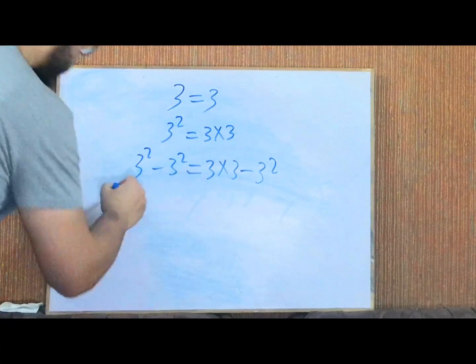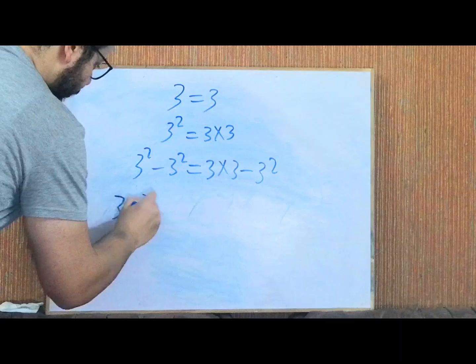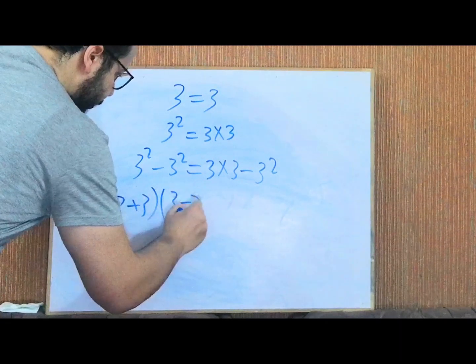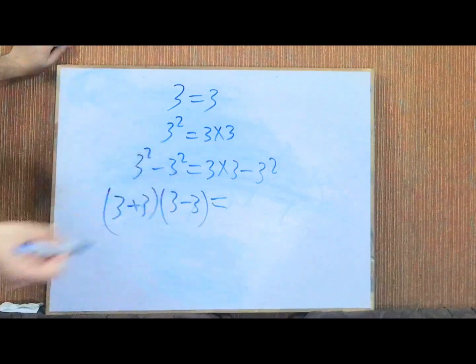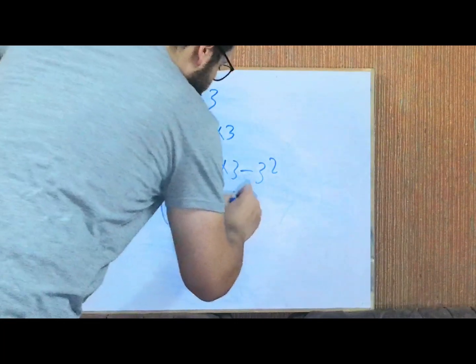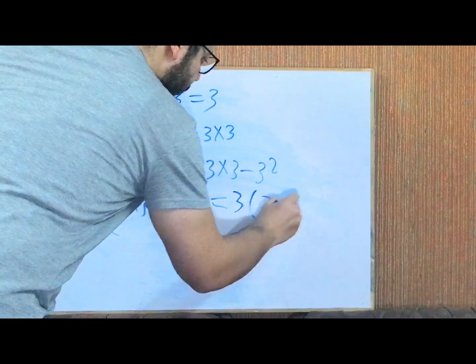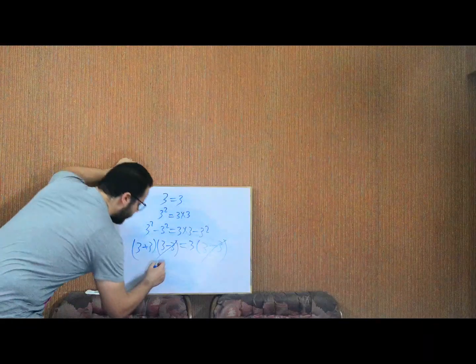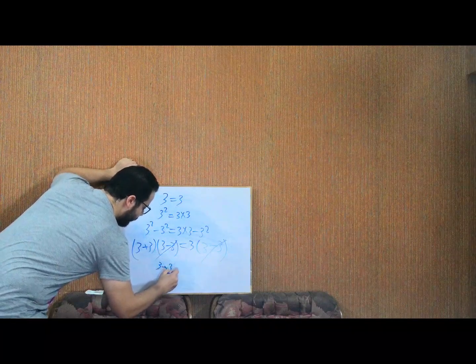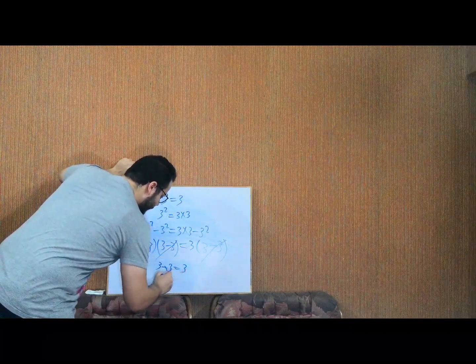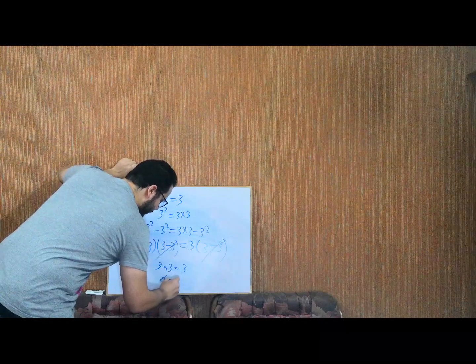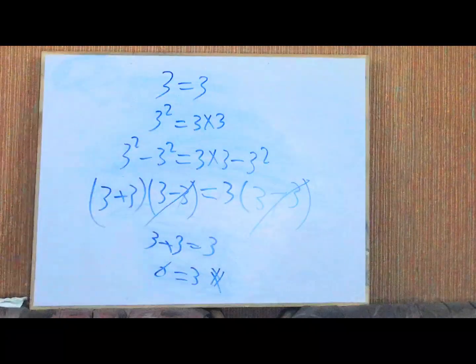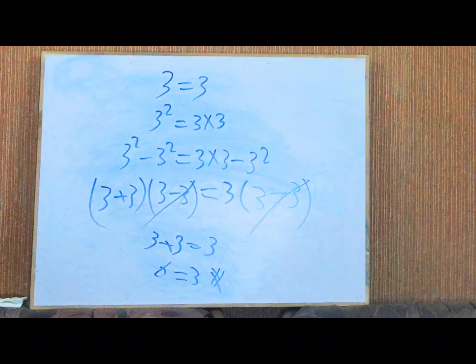Difference between two squares: that means (3+3)(3-3). Take 3 as a common factor: 3(3-3). Cancel terms: 3+3 equals 3. That means 6 is actually equal to 3. Proved! 6 equals 3 and 4 equals 2.